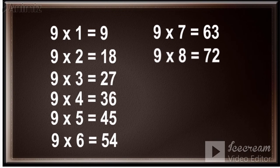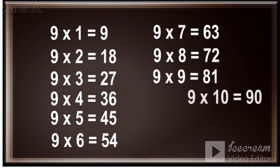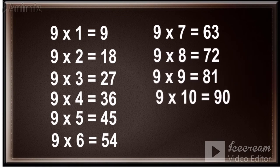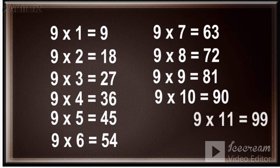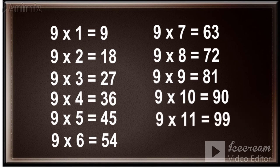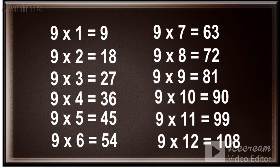9 sevens are 63. 9 eights are 72. 9 nines are 81. 9 tens are 90. 9 elevens are 99. 9 twelves are 108.